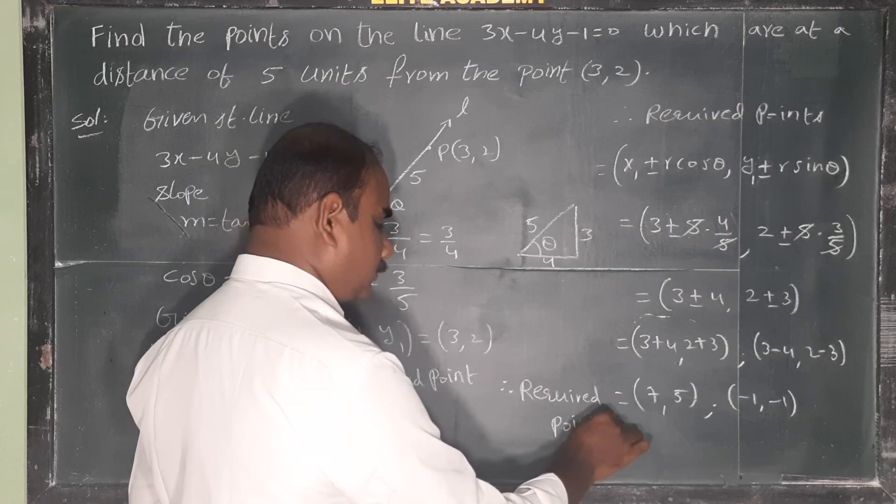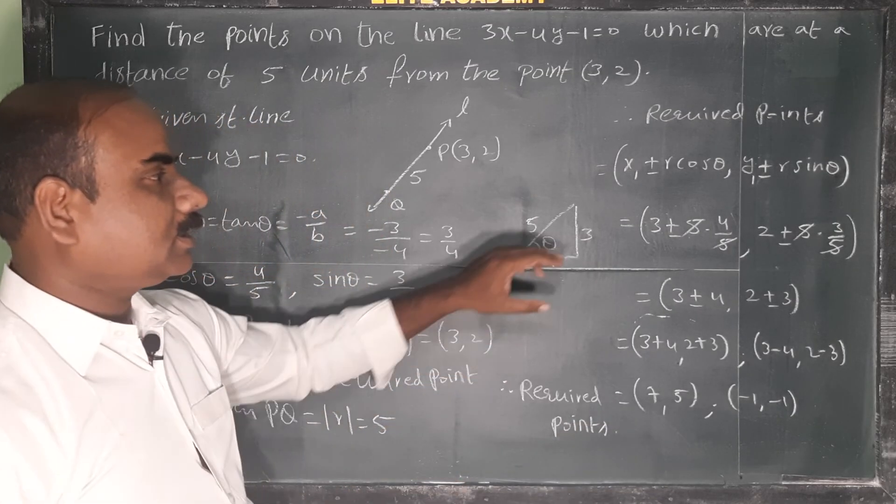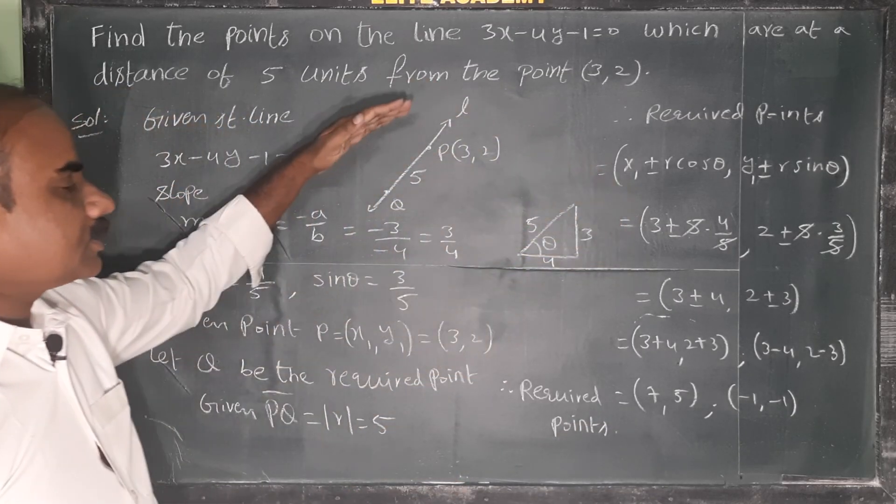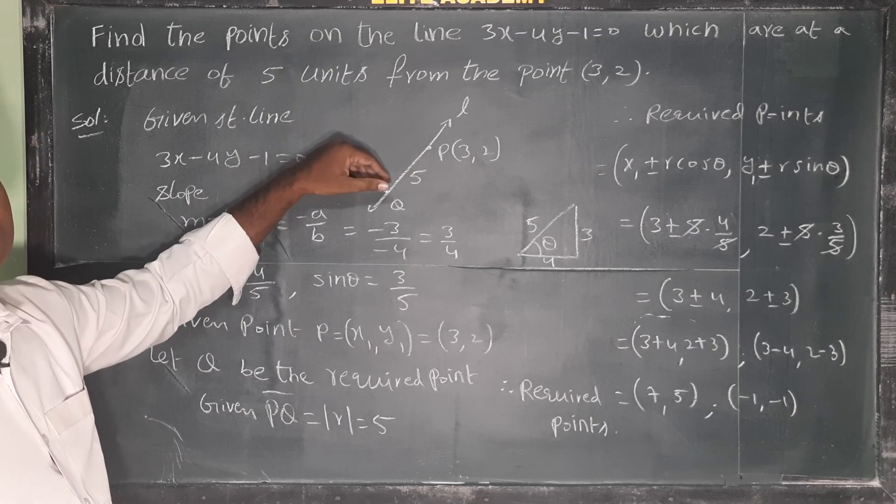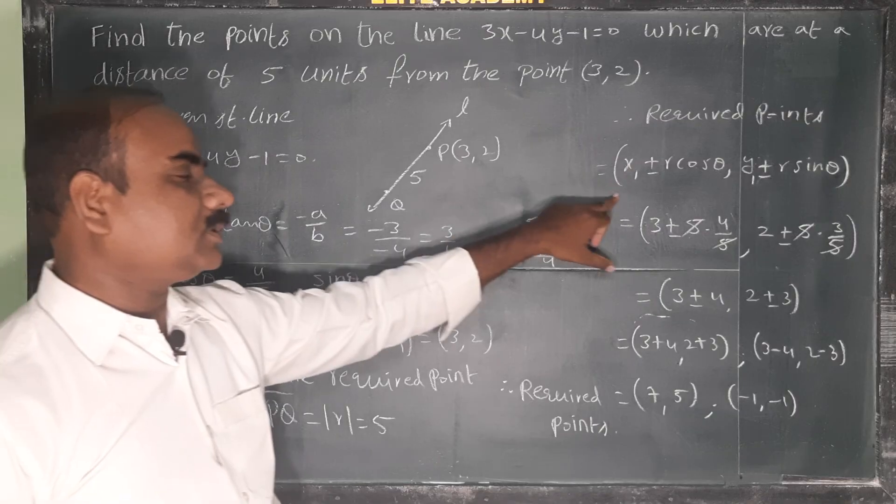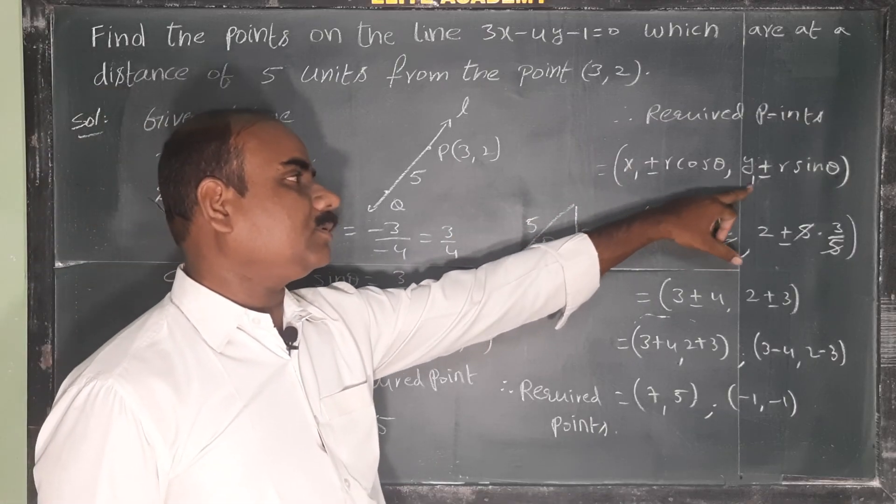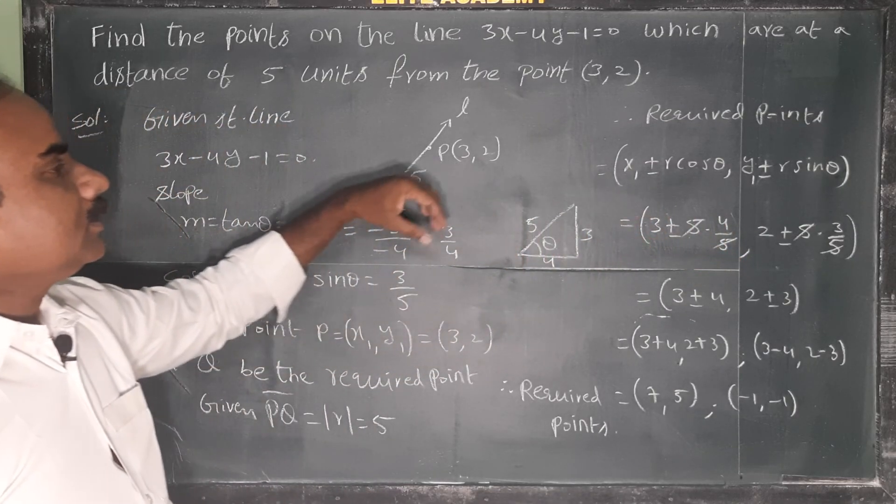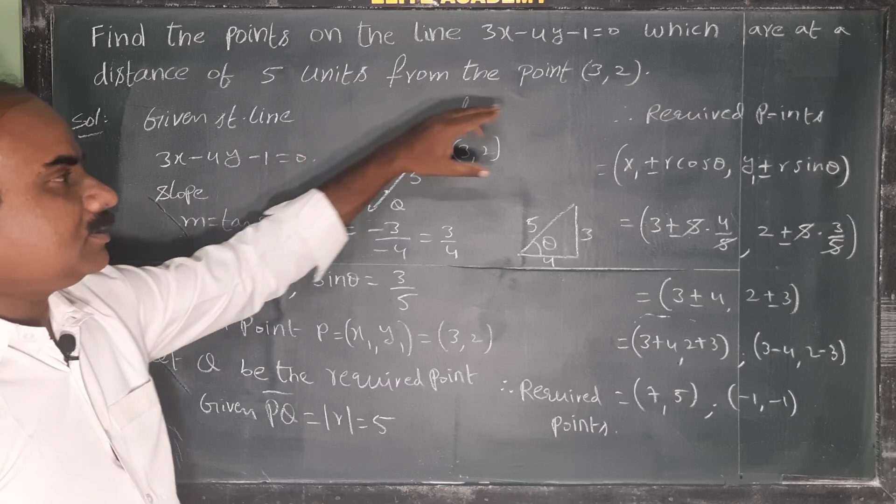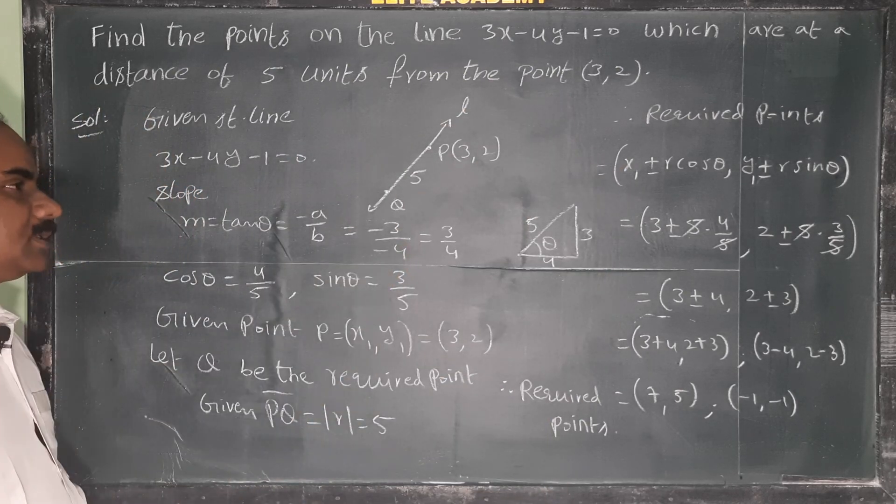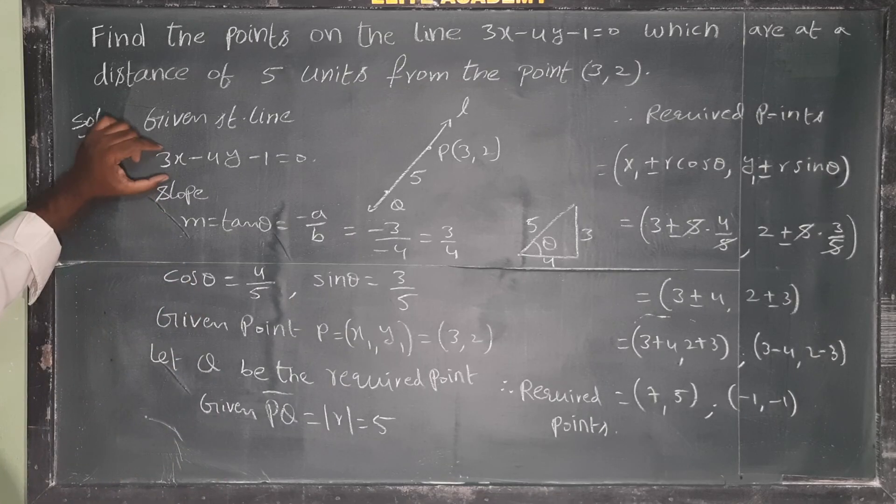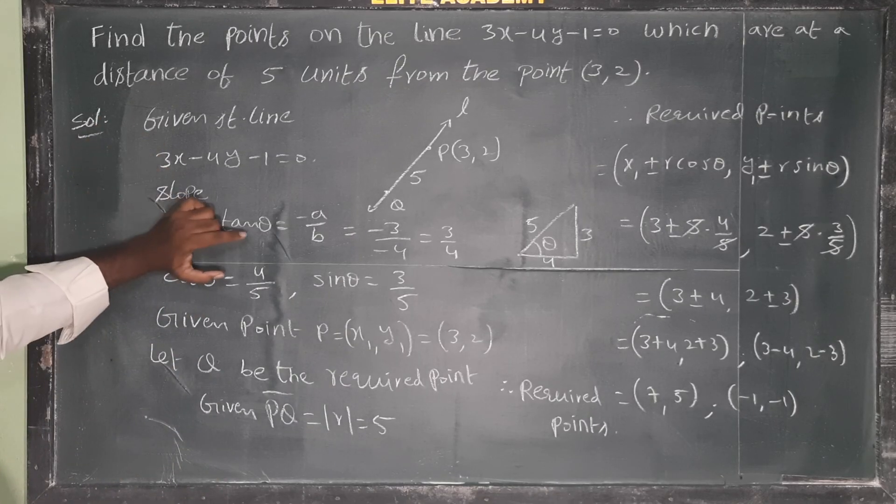Required points. So my formula is this: for points which are on a straight line, one point at a certain distance from another point, the formula is (x₁ plus or minus r cos theta, y₁ plus or minus r sin theta). This process gives us the points. For the given straight line, slope m equals tan theta.